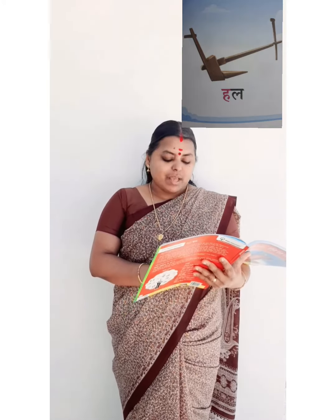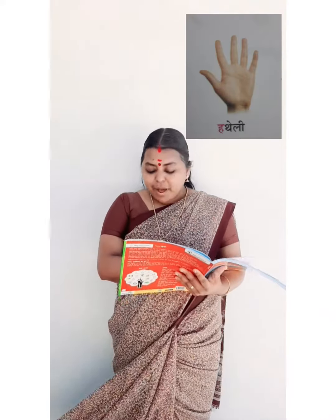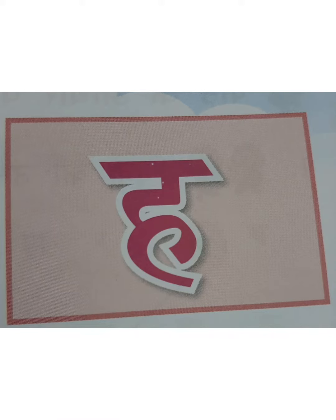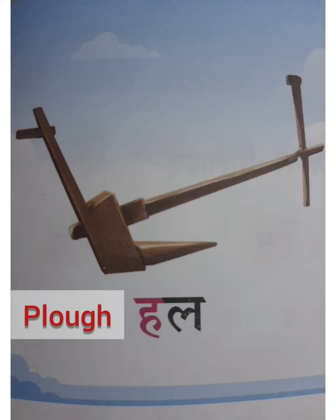In page number 95, you can see the words with HAL: PLAW, HATHOUDA, HAMMER, HATHELY, PALM, HARA, GREEN.